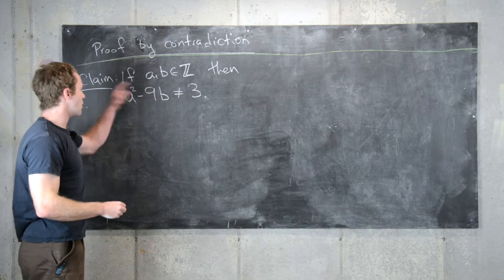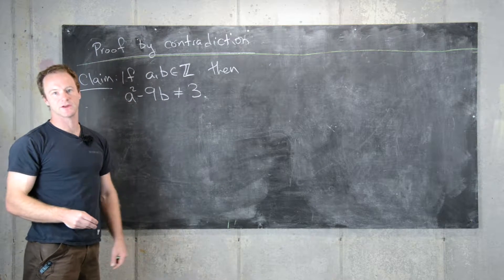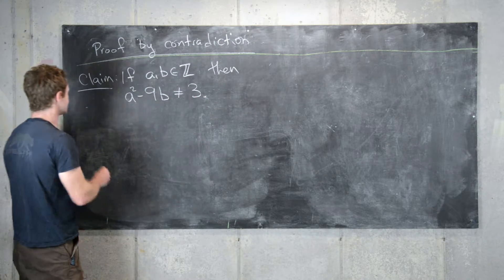In other words, there's no integer solution to a squared minus 9b equals 3. So now let's get to proving this.